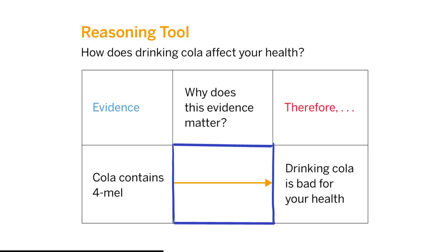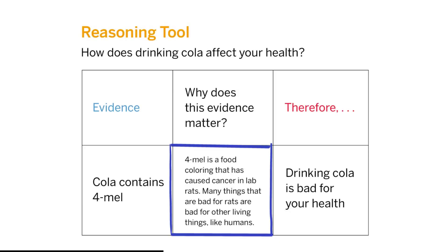The reasoning tool shows that there is a missing connection between the evidence and the claim in the cola argument. Filling out the middle column helps make this connection because it answers the question: why does this evidence matter? The bottom row, from left to right, shows how to use the tool. Formel is a food coloring that has caused cancer in lab rats. Many things that are bad for rats are bad for other living things like humans. It explains what formel is and why it might be harmful to a human's health.